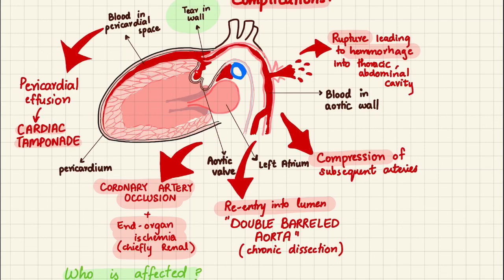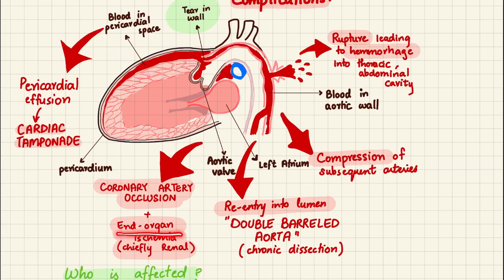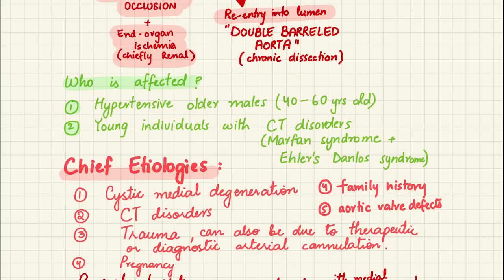Lastly, we can have coronary artery occlusion. The coronary artery openings are behind the aortic valve leaflets, and when the dissection is ongoing, they become compressed, leading to low blood supply to the heart muscle and potentially myocardial infarction. There can also be end-organ ischemia, chiefly renal, leading to further complications.